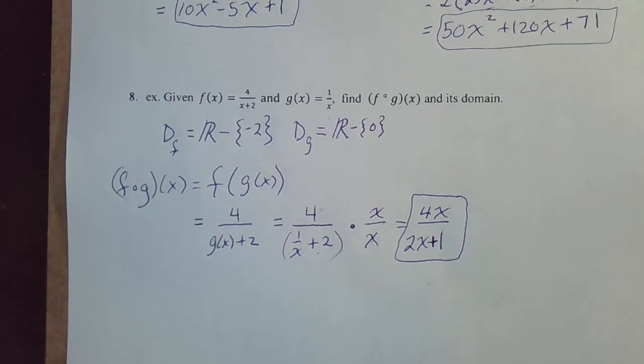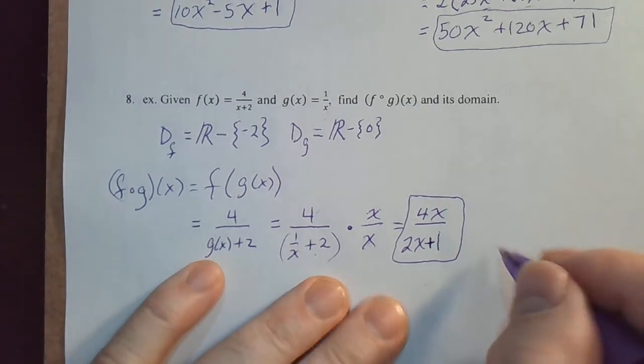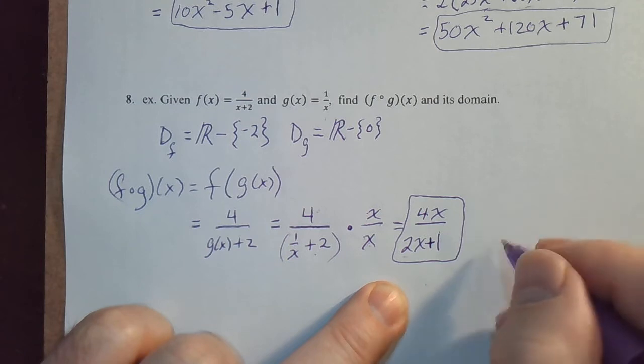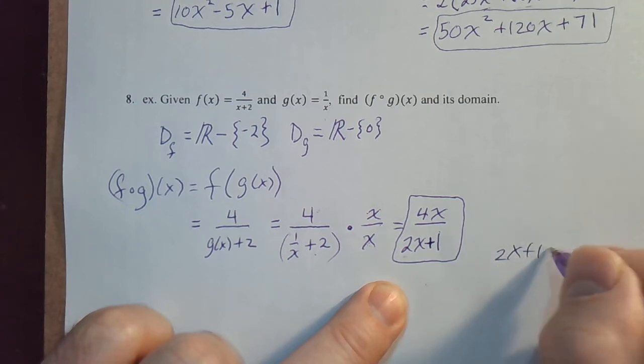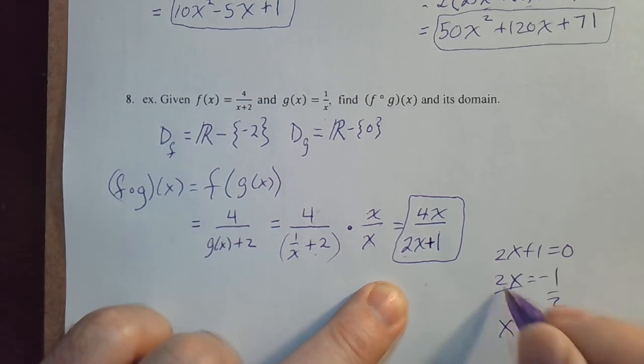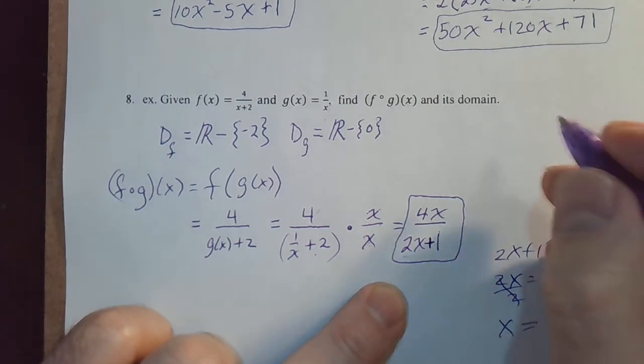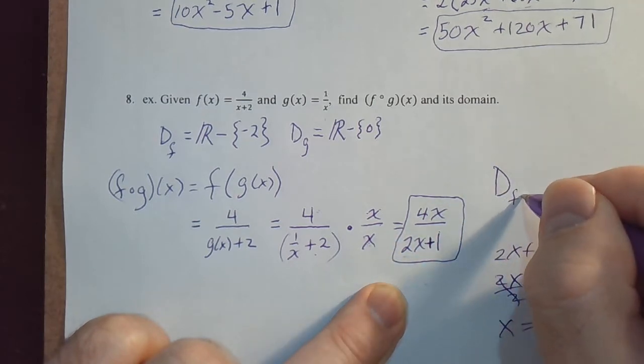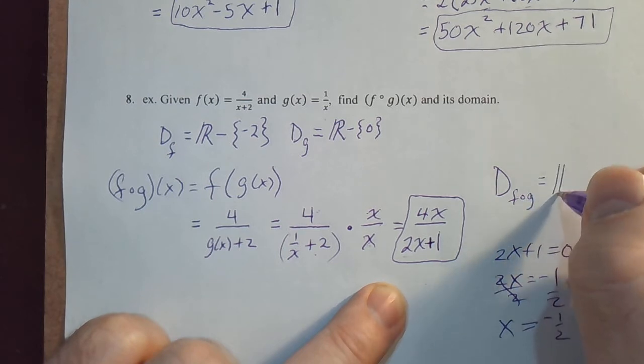Now what is the domain of this function? You might be tempted to say it's everything except the number for x that will make the denominator a zero. What one number is that? Let's go ahead and see. 2x plus 1 set it equal to zero would mean 2x is equal to negative 1, x equals negative 1 half. So you might say that the domain of f composed with g is all reals except for negative 1 half.